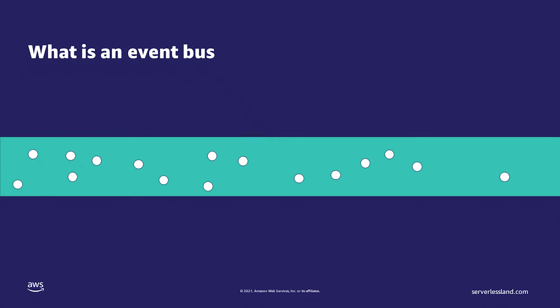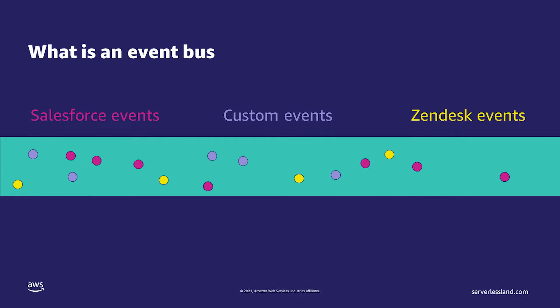Second, let's define an event bus. An event bus can ingest many different events from many different locations. As the events enter the bus, they remain on the bus for a configured period of time. These events can come from external SaaS services like Salesforce or Zendesk, from internal AWS services like Amazon S3 or AWS CloudWatch, or from custom applications that you are building.